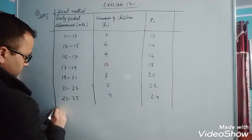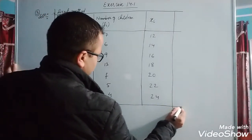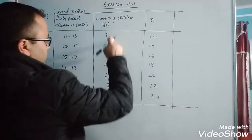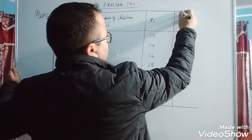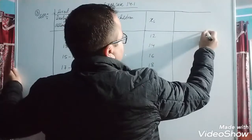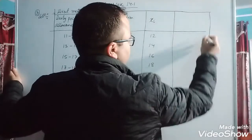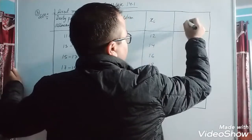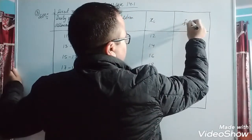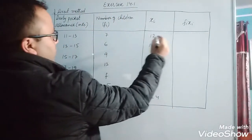Now before going to add, first we will multiply fi and xi. Now multiply: 7 into 12 is 84. 6 into 14 is 84.